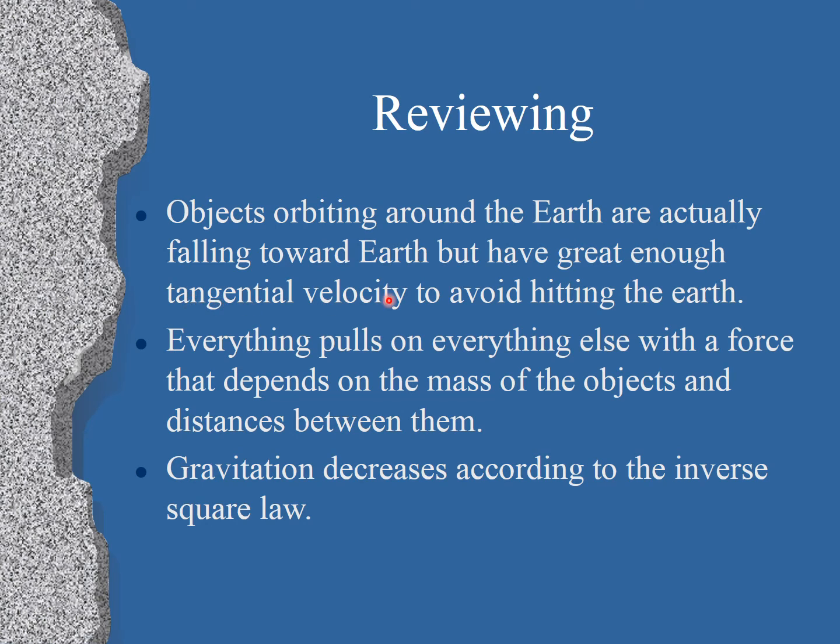So in review, objects orbiting around the Earth are actually falling. But they have enough velocity to avoid hitting the Earth, and so they keep on going around and around. It's just like the stopper spinning around on a string. Gravity is the string. Everything pulls on everything else with a force that depends on the masses of the object, and it's inversely proportional to the distance between them squared. So gravitation decreases according to something called the inverse square law. And that applies to light, to electric charge, to magnetic fields, and a lot of things. So you need to learn that inverse square law.